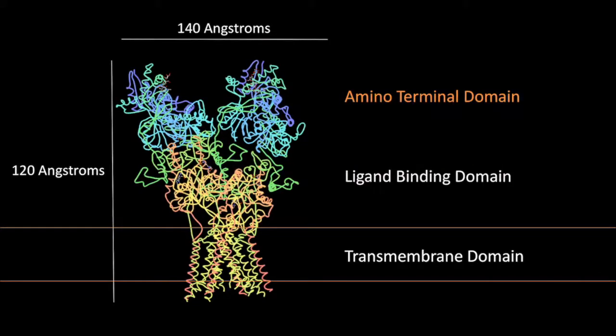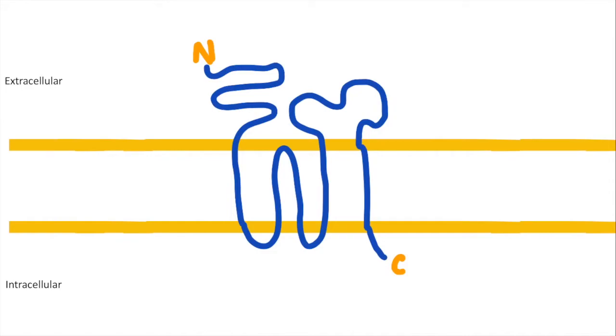Next, the ligand binding domain. GluA subunits have extracellular aminoterminates and intracellular C-terminates as shown. The ligand binding domain is made up from aminoterminal region S1 and S2. This is where glutamate binds.